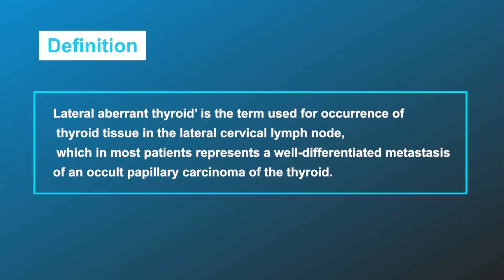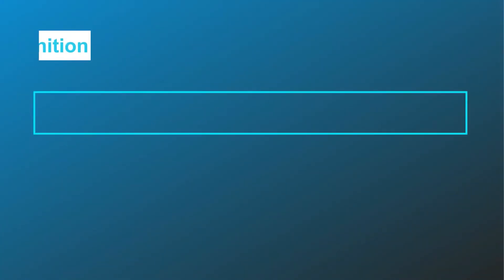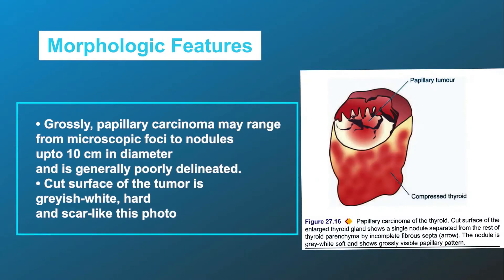Lateral aberrant thyroid is the term used for occurrence of thyroid tissue in the lateral cervical lymph node, which in most patients represents a well-differentiated metastasis of an occult papillary carcinoma of the thyroid.